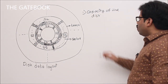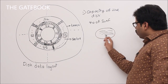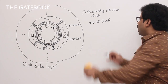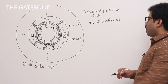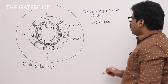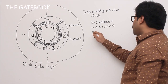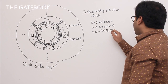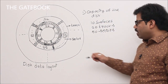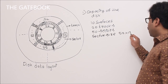To know the capacity of the disk, you first need to know the number of surfaces. A plate has two surfaces at most, and you can use one or two surfaces to store data. For example, let's say a disk has 10 surfaces, each surface has 20 tracks, each track has 50 sectors, and each sector size is 512 KB.